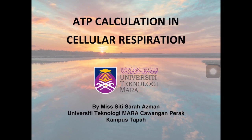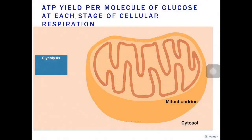Assalamualaikum and hi everyone. Welcome to the second part of the video where I am going to show you the ATP calculations in cellular respiration. From the first part of our video, the first stage of cellular respiration, which is glycolysis, we know that two molecules of ATPs are being produced and also two molecules of NADH as well.